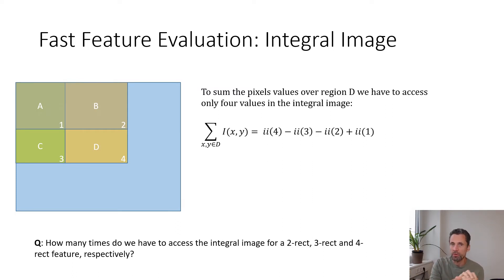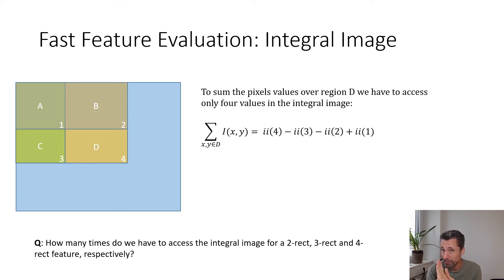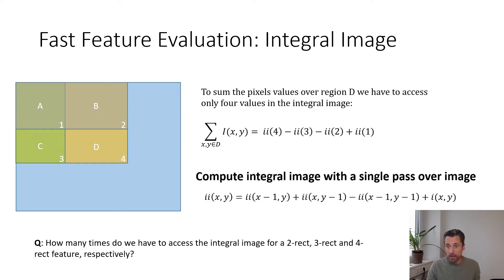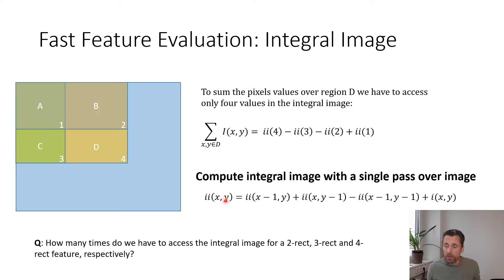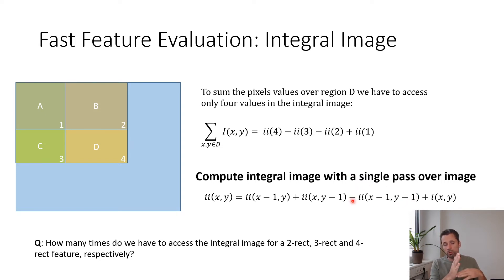This allows us to compute the value of a two-rect, three-rect, or four-rect feature with a constant number of lookups. To compute the integral image itself, we iterate over all pixel positions row by row, column by column. For position (x, y) we add the pixel to the left, the pixel above, subtract the left-diagonal value to avoid double-counting, and add the actual image pixel at (x, y).